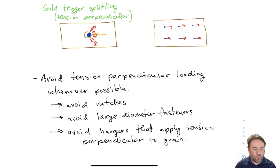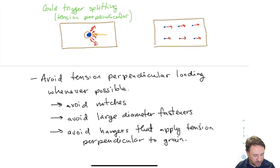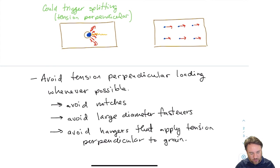The weakest way to load a piece of wood is tension perpendicular — pulling the fibers apart — because the only thing holding those fibers together is the lignin, which is much weaker than the fibers themselves. This is the same problem as the large diameter fastener causing tension perpendicular and premature splitting. Another example we looked at is the notch shear problem, where the reentrant notch has a large tension perpendicular stress causing splitting and premature failure.